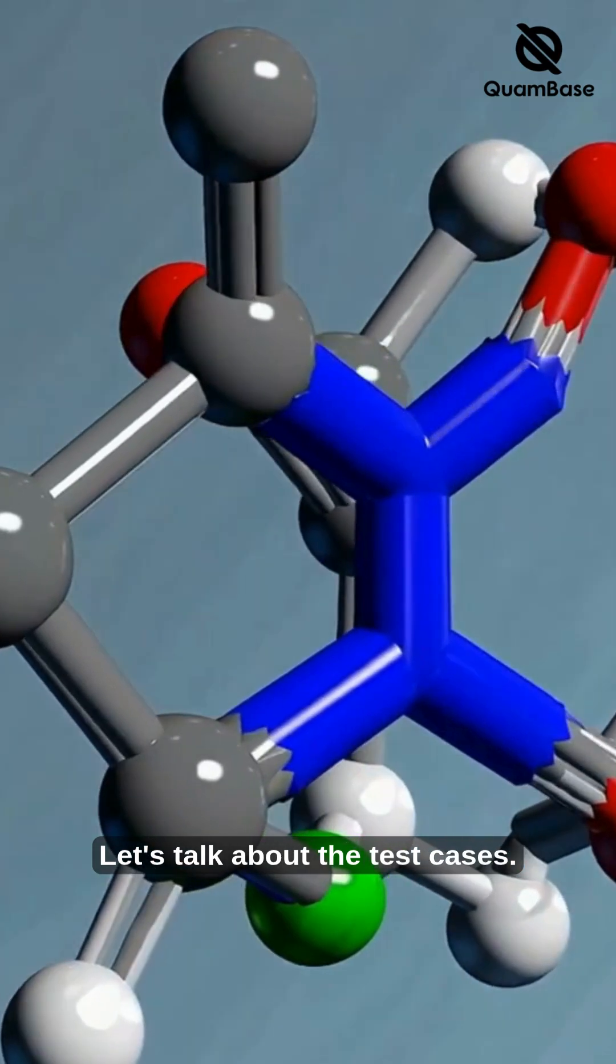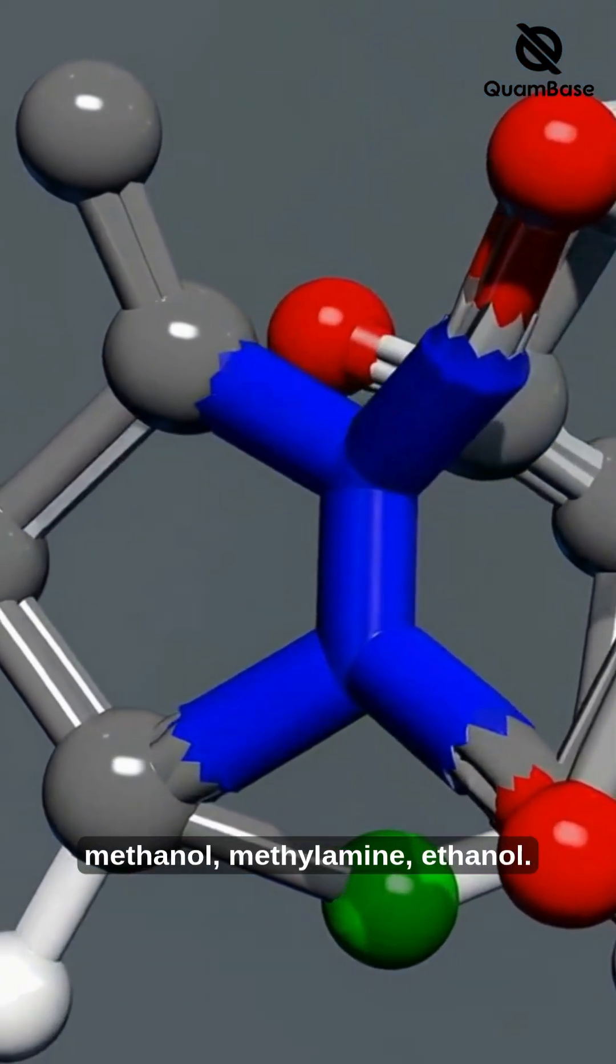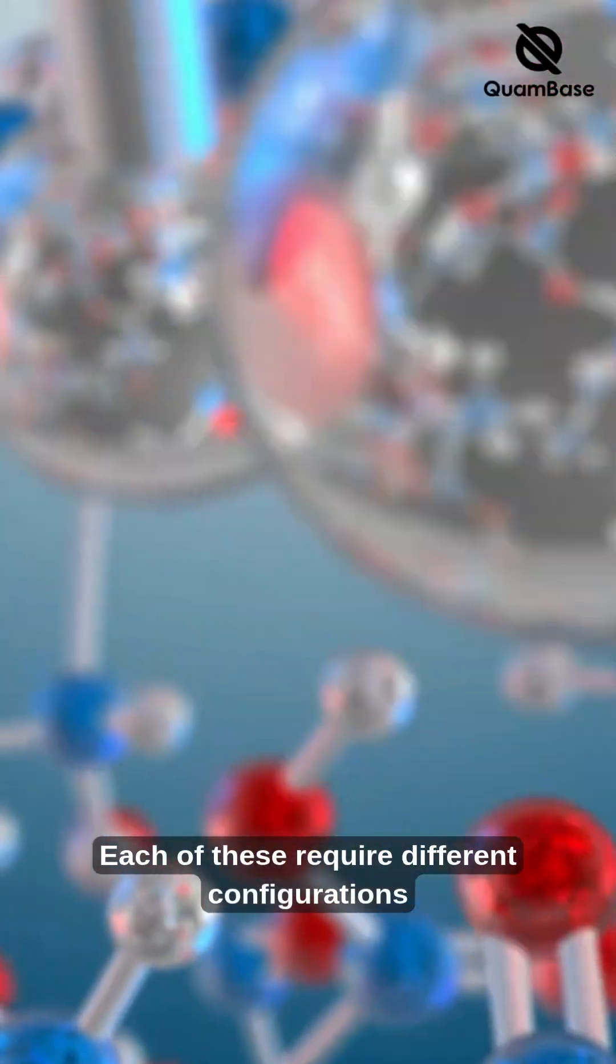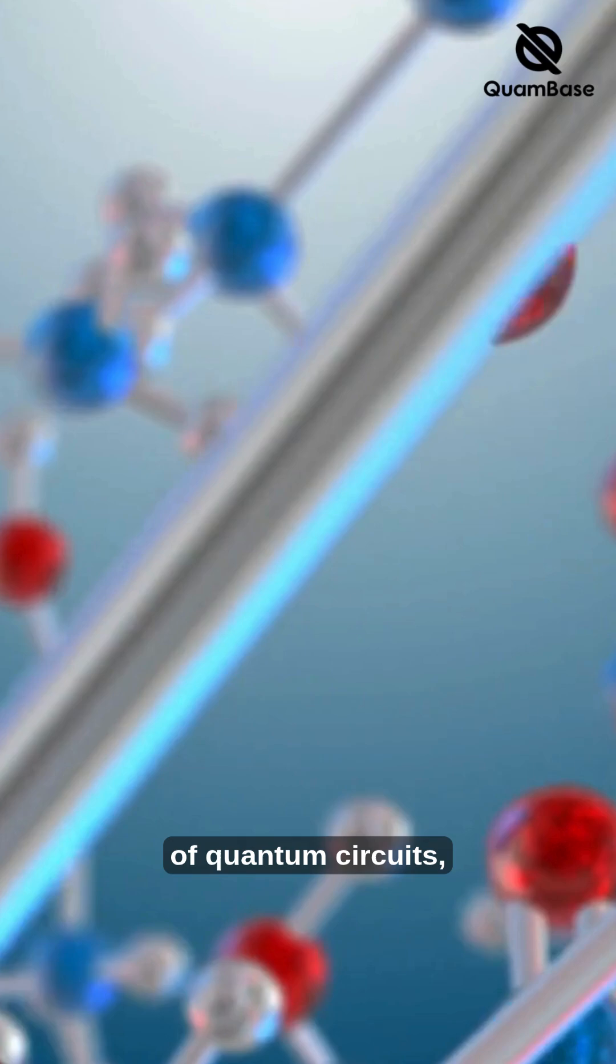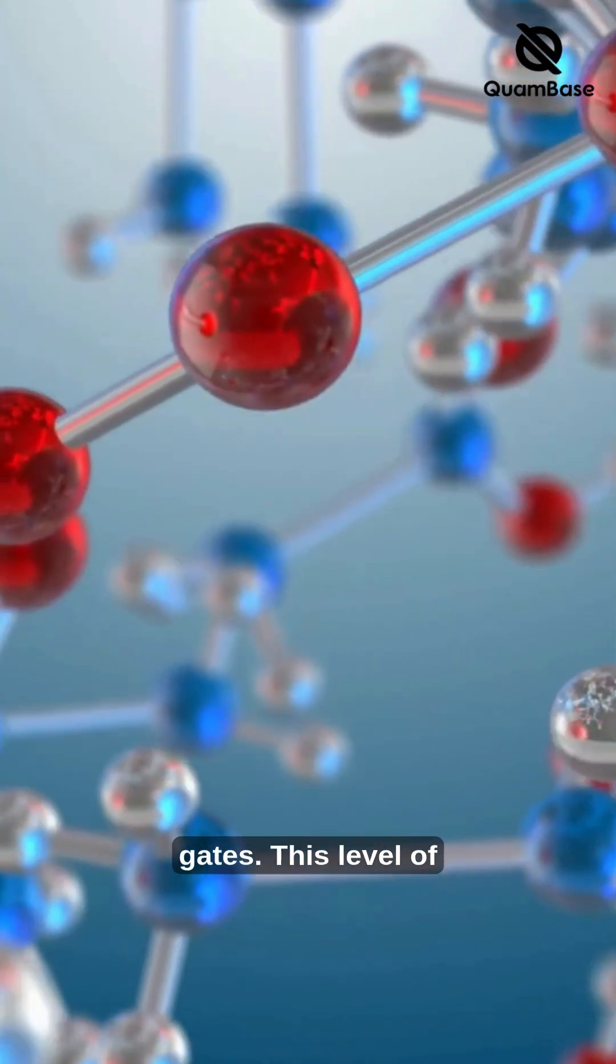Let's talk about the test cases. The team focused on four molecules: methanol, methylamine, ethanol, and water. Each of these require different configurations of quantum circuits, ranging from 60 to over 2,000 quantum gates.